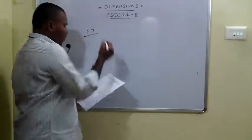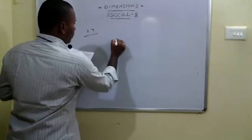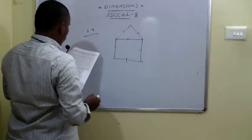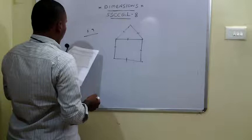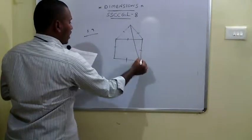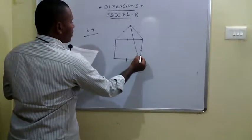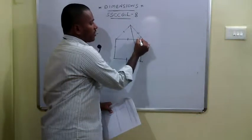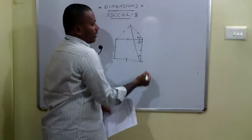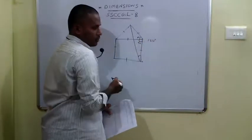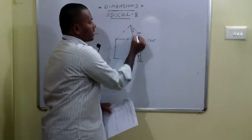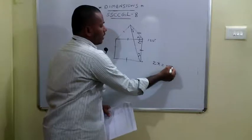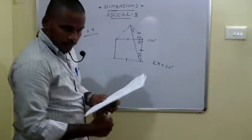The 69th problem: we have a square with an equilateral triangle on top. They ask us to calculate angle PSR. In the combined figure, this angle is the sum of 90 degrees (from the square) and 60 degrees (from the equilateral triangle), totaling 150 degrees. The two sides are equal, so let the base angles be X and X. Since angles in a triangle sum to 180, 2X equals 30, so X equals 15 degrees.